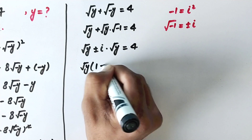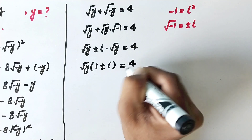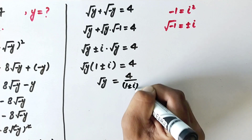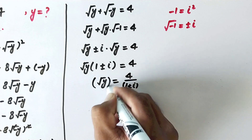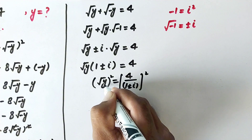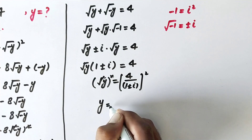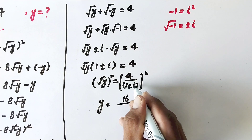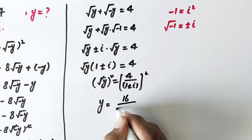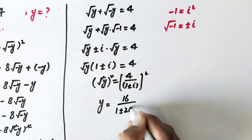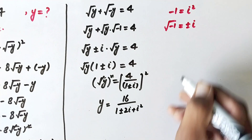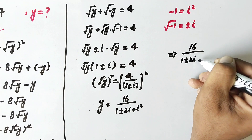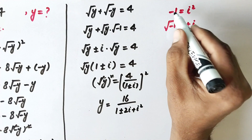From these two values we can take square root of y as a common factor, so square root of y times 1 plus or minus i is equal to 4. In the next step, square root of y is equal to 4 over 1 plus or minus i. To eliminate the square root, we take square on both sides, so y is equal to 16 over 1 plus or minus i whole squared. Opening this square: 1 plus or minus 2i plus i squared.